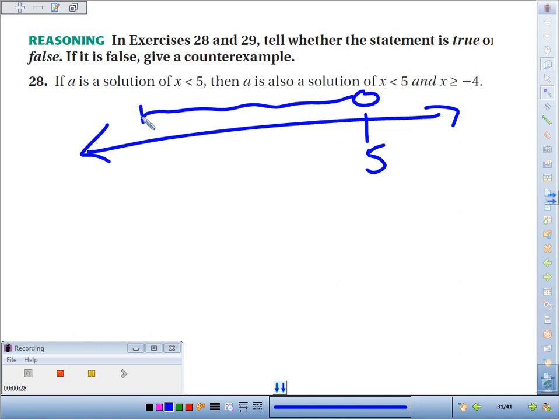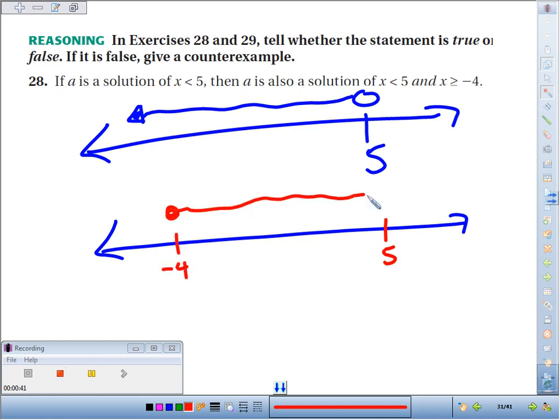Are we also a solution of less than 5 and greater than or equal to negative 4? What does that look like? Less than 5 and greater than or equal to negative 4 goes like this until we're less than 5. So basically, if you're in the blue, are you always in the red?